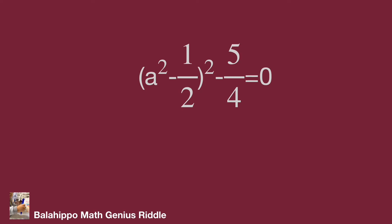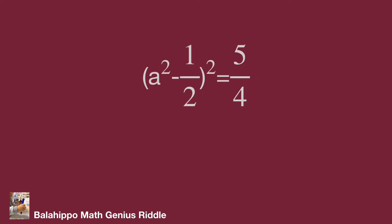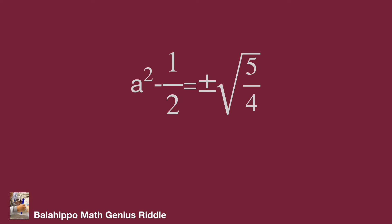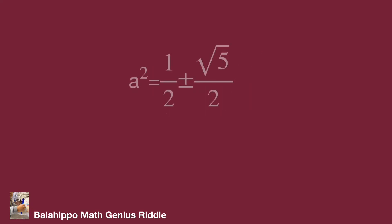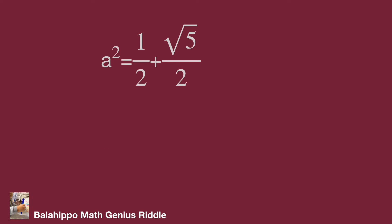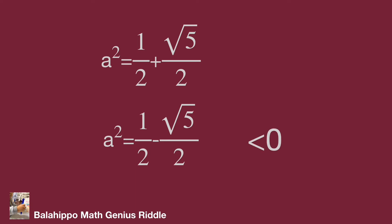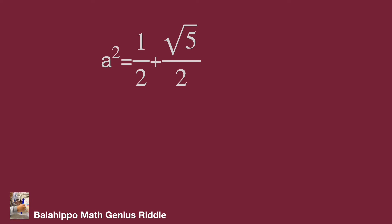Move minus 5 over 4 to the right side. Then take the square root: the square root of 5 over 4 becomes root 5 over 2. So a squared equals one-half plus or minus root 5 over 2. Checking: the value one-half minus root 5 over 2 is less than 0, so it is not a real solution. Therefore, only a squared equal to one-half plus root 5 over 2 is the valid value.